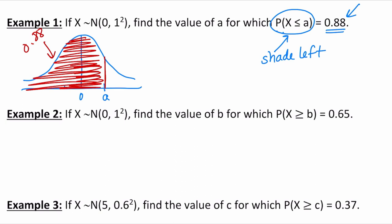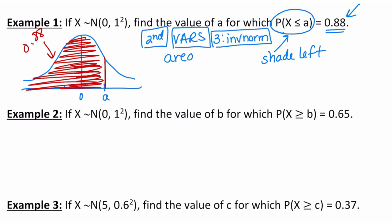To find the answer, go to second vars — this is a type of distribution — and choose option 3, which is inverse norm. The calculator asks for the area, the mean, and the standard deviation. It may also ask whether it's left tail or right tail. If your calculator doesn't ask, it probably only works left tail. In this case it's not a problem because I'm shading everything to the left.